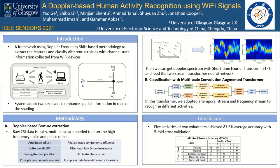You can see the two streams here. In conclusion, we achieved a baseline of 87.6% average accuracy on the limited dataset with five-fold cross-validation. The result may not be that impressive, but it is still a good result, and we can conclude that the transformer could be used in human activity recognition using Doppler spectrum. Thank you for listening.